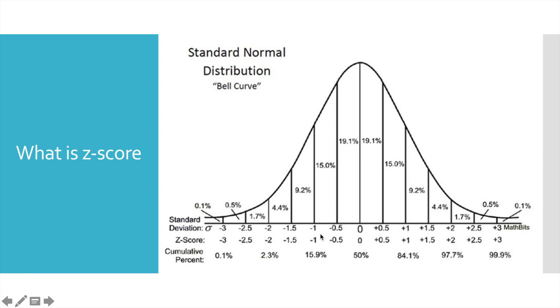In z-score range between minus 1 and 1, we'll have approximately 68% of all spread values. And in the range between minus 2 and 2, 95%.